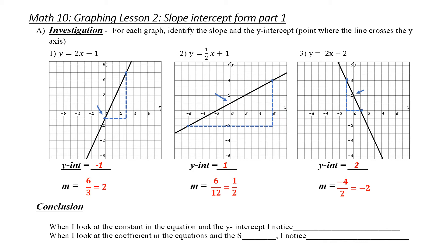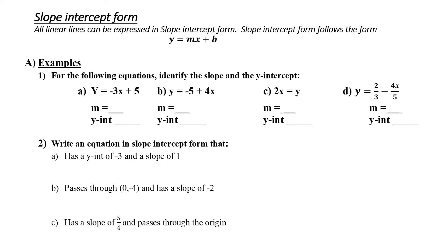Conclusion. What I hope you noticed is the constant in the equation and the y-intercept are the same. And when you looked at the coefficient of the equation and the slope, you should have noticed that they are the same as well. This leads us into slope-intercept form. This is the base formula: y is equal to mx plus b. x and y are constantly changing depending on where we are on the line. However, m and b should be the same — m represents my slope, and b represents my y-intercept.